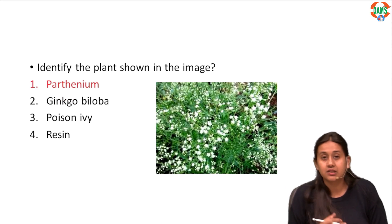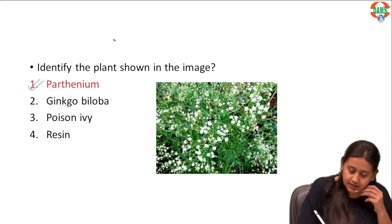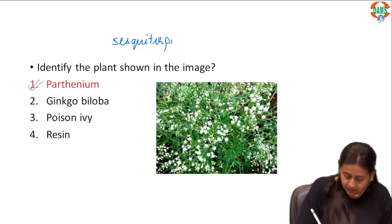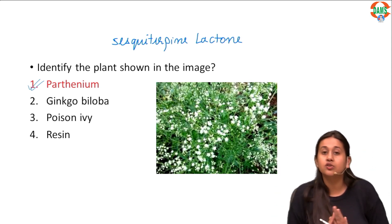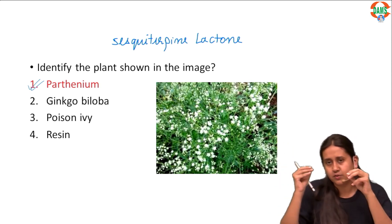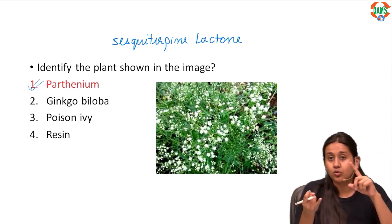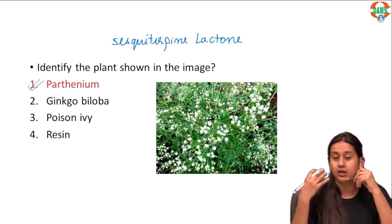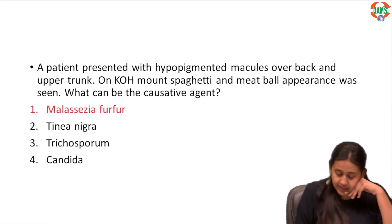Next question: identify the plant shown in this image. The correct answer is this is a parthenium plant. The parthenium plant contains an allergen — sesquiterpene lactone — which is responsible for phytodermatitis or airborne contact dermatitis caused by this plant. It is a plant with small white flowers, a very wild flower that can grow anywhere, and it causes phytodermatitis either through touch or through airborne exposure.